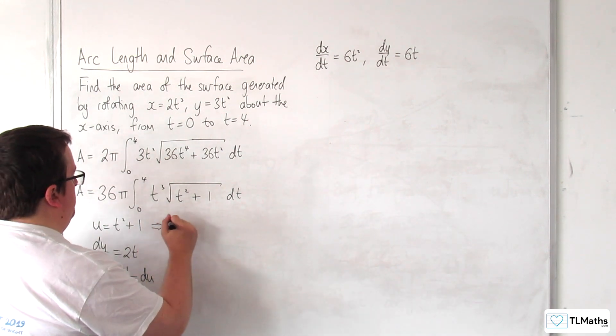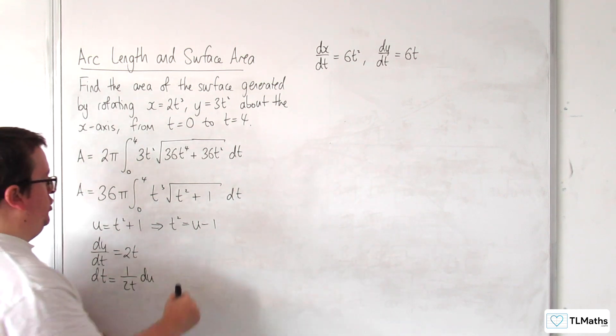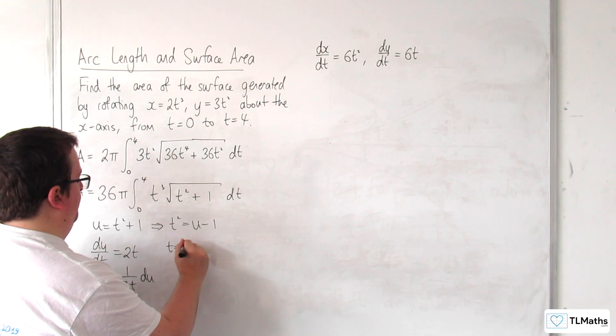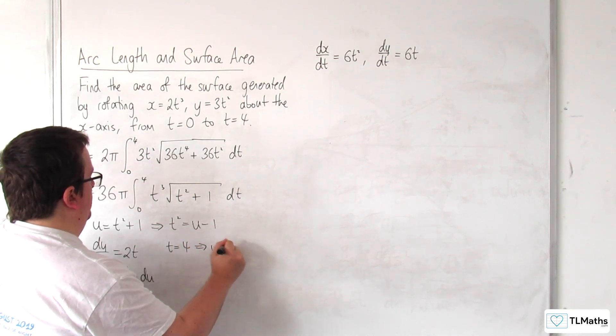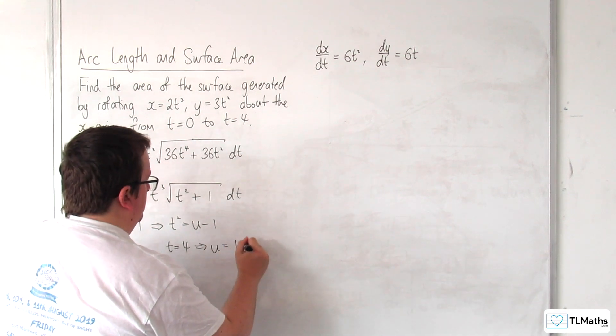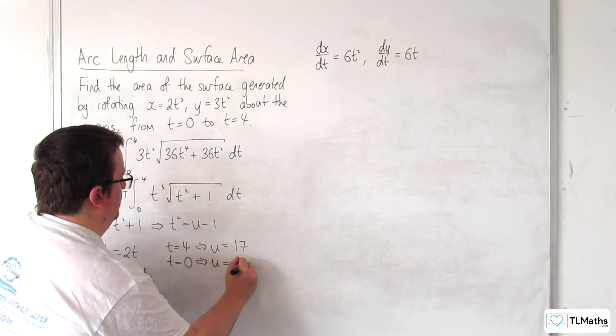Okay, I'm going to rearrange that to get t squared, which is u minus 1. I'm going to need to change the limits as well, so when t is equal to 4, u is going to be equal to 16 plus 1, so 17. And when t is 0, u is going to have to be 1.